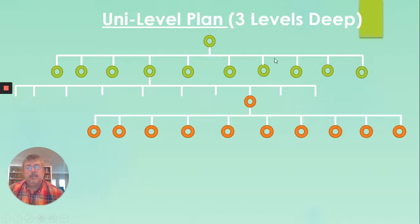Now you'll notice in a unilevel plan, you may get paid so many levels, might be three, might be five, might be seven, whatever. It has a limited depth. So you get paid only to a certain point. So this is the first level. If you look at my mouse, this is the second level. And this is the third level. So any growth that happens down here, you don't get paid for because you don't receive the volume from that.